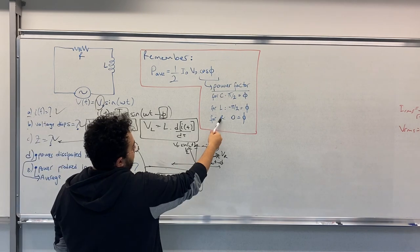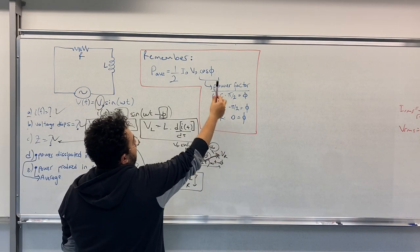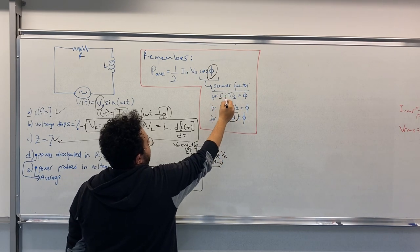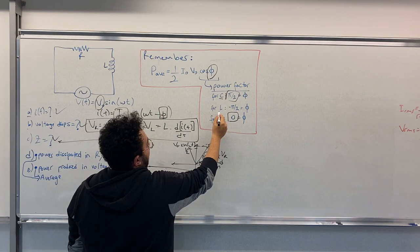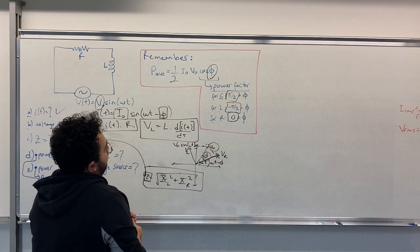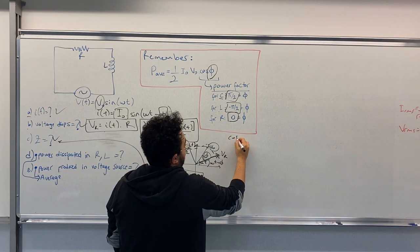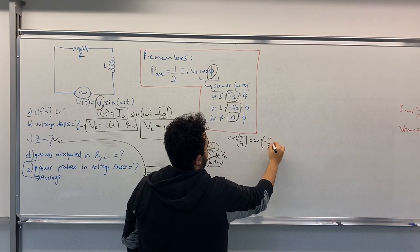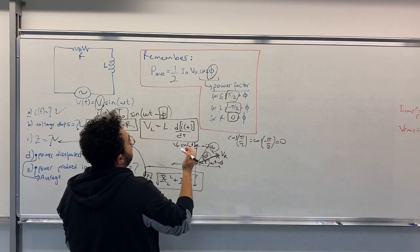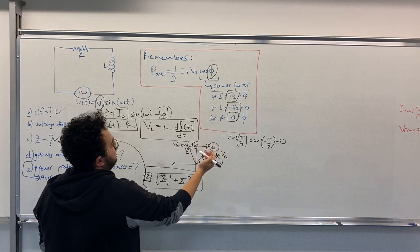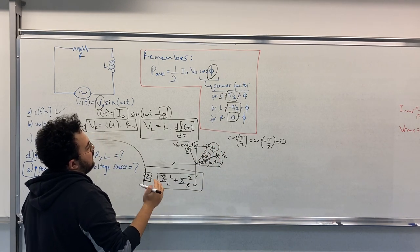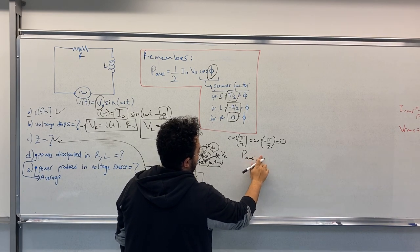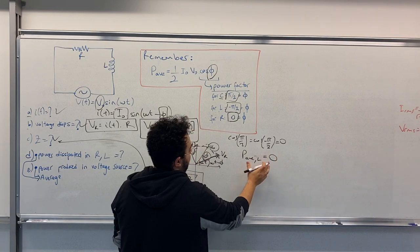For R, for resistance, this angle is 0. For C, π/2. And for L, minus π/2. If you calculate cosine π/2 or cosine minus π/2, you will get 0. So the power dissipated in capacitors and inductances is 0. P equals 0 for the question. So we know that the inductance does not dissipate any power.